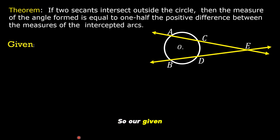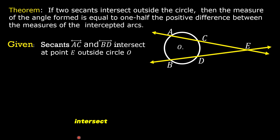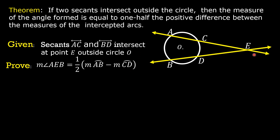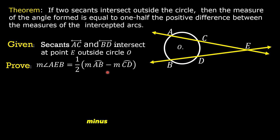So, our given: secants AC and BD intersect at point E outside circle O. We are going to prove that the measure of angle AEB is equal to one-half times the measure of arc AB minus the measure of arc CD.